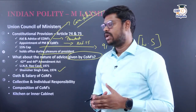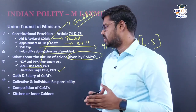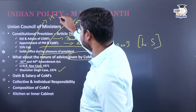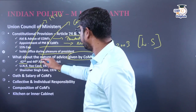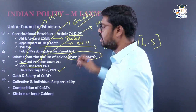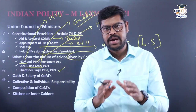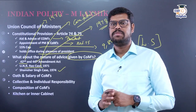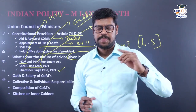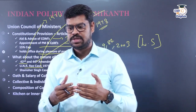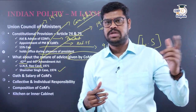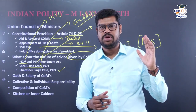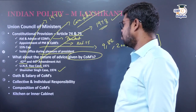Under the 42nd Constitutional Amendment Act in 1976, the President must act in accordance with the aid and advice of the Council of Ministers. On top of this, the Constitution was further amended by the 44th Constitutional Amendment Act in 1978, under Morarji Desai's Janata Party. This amendment gave the President the power to send the Council of Ministers' advice for reconsideration once. But if the advice is sent back again, it is binding upon the President.